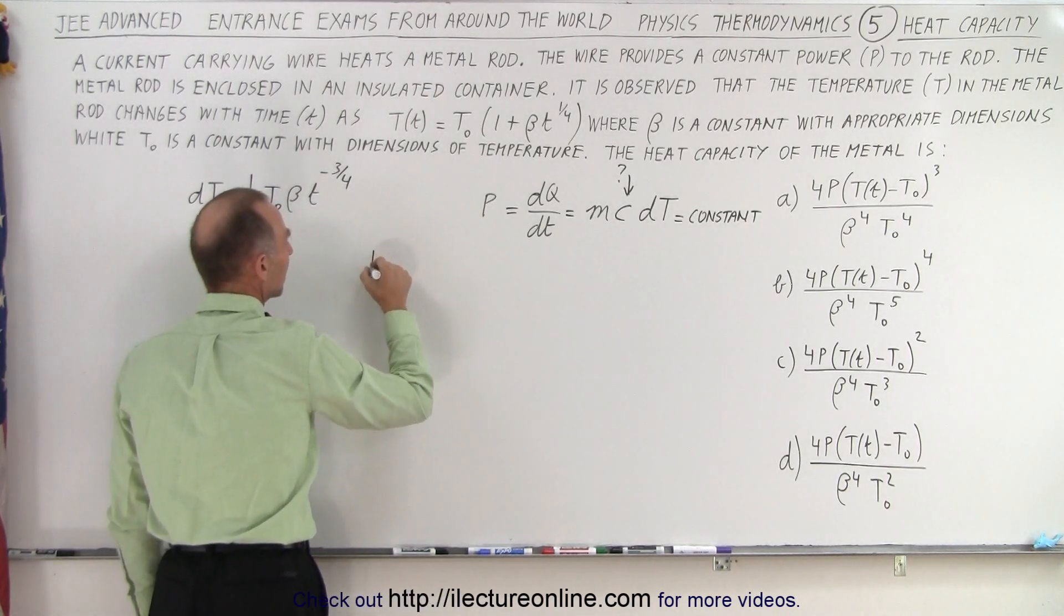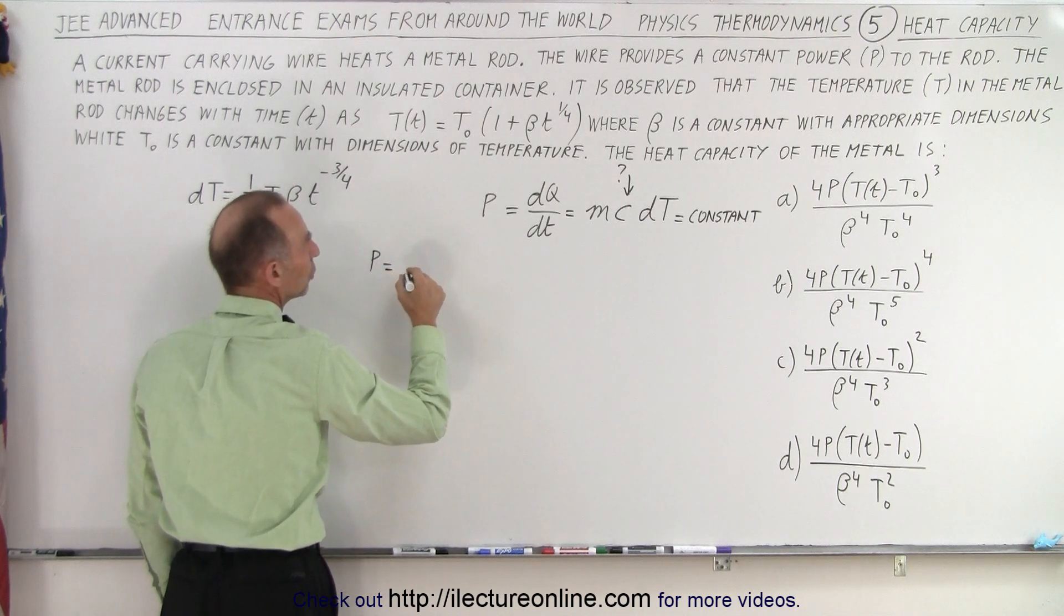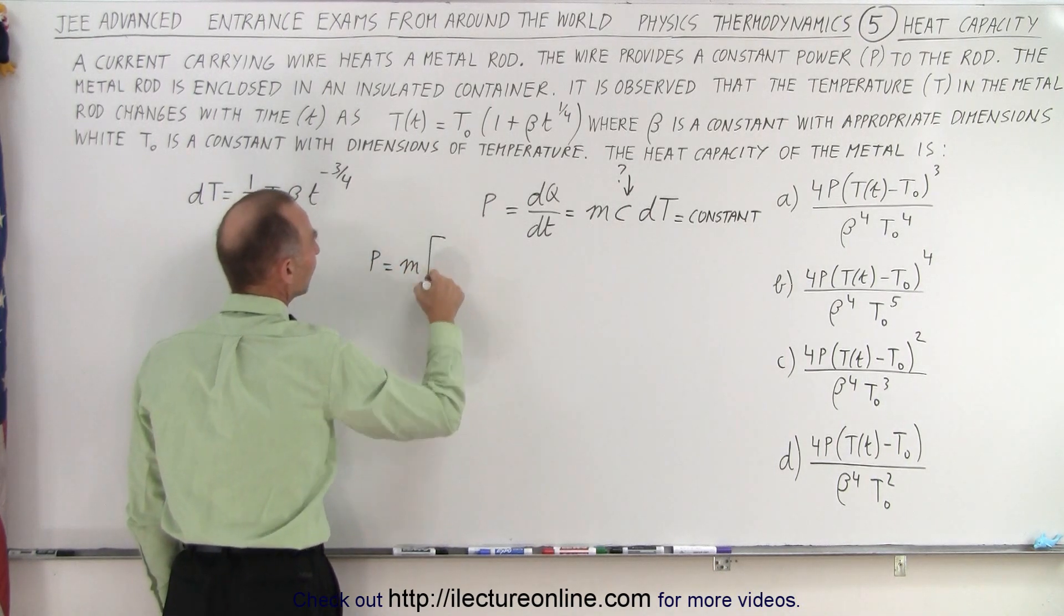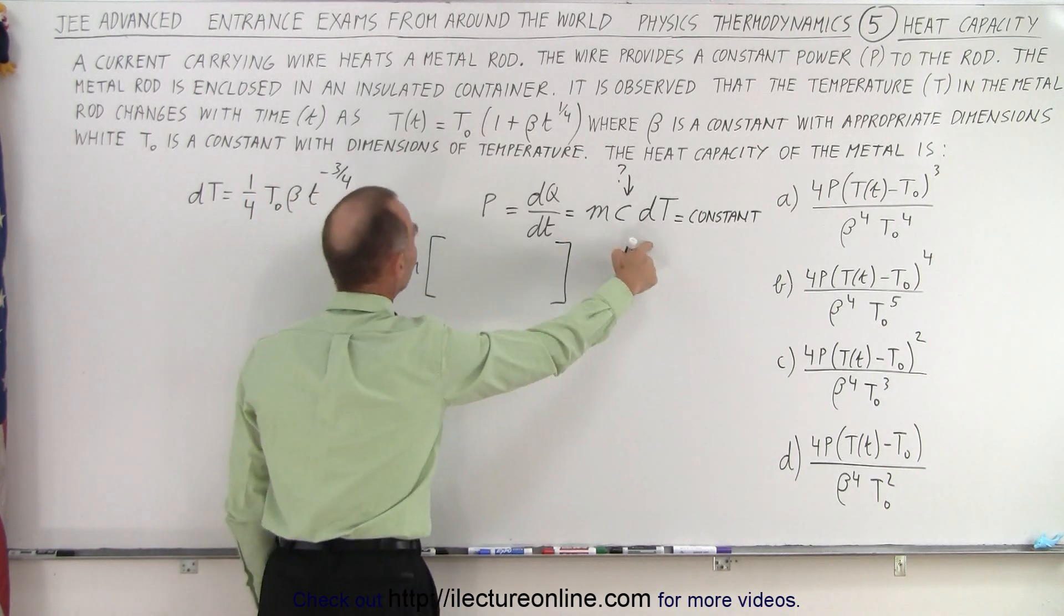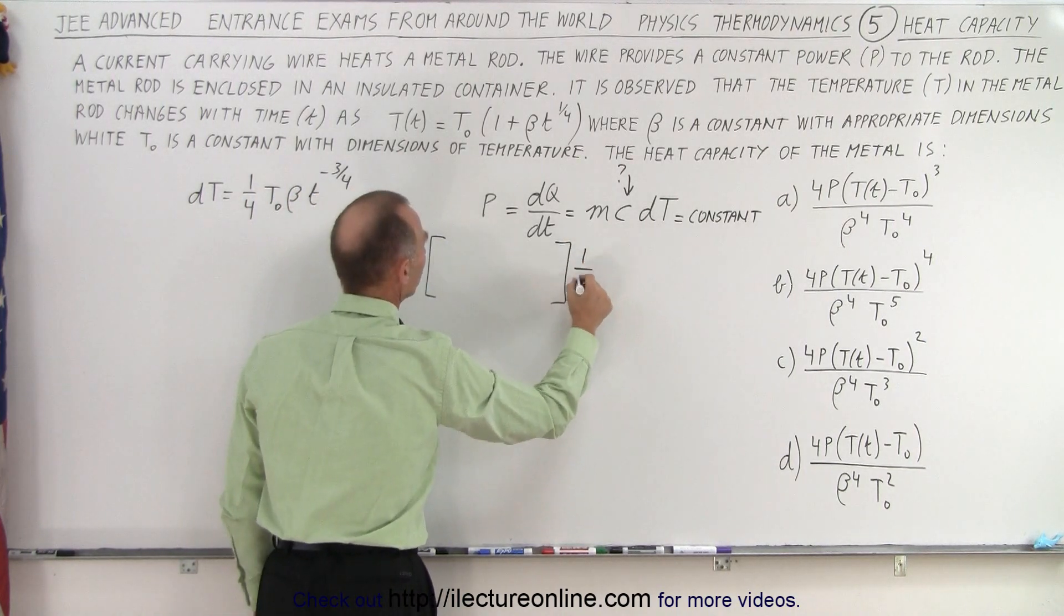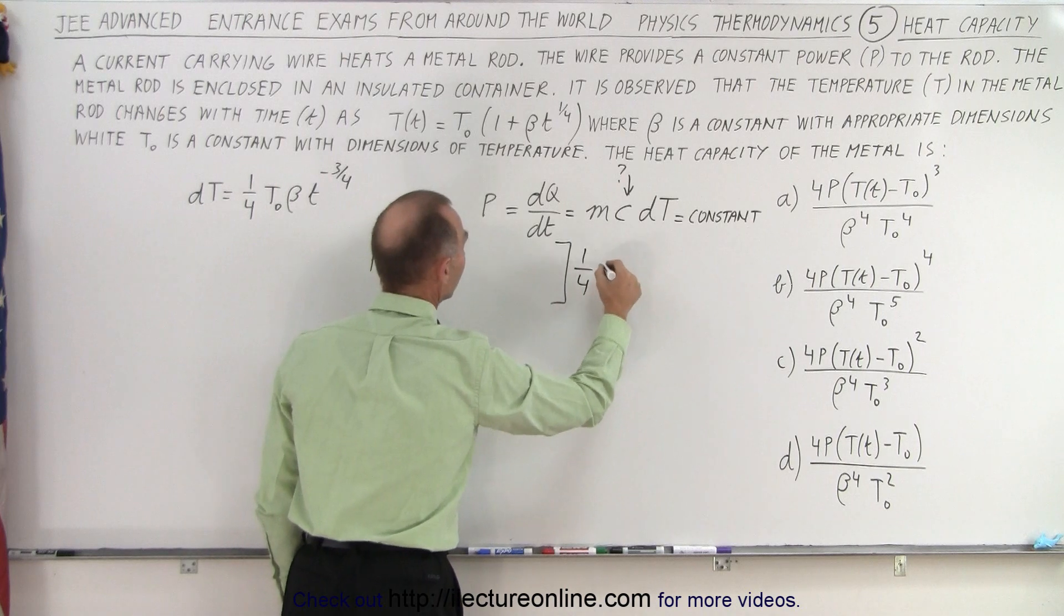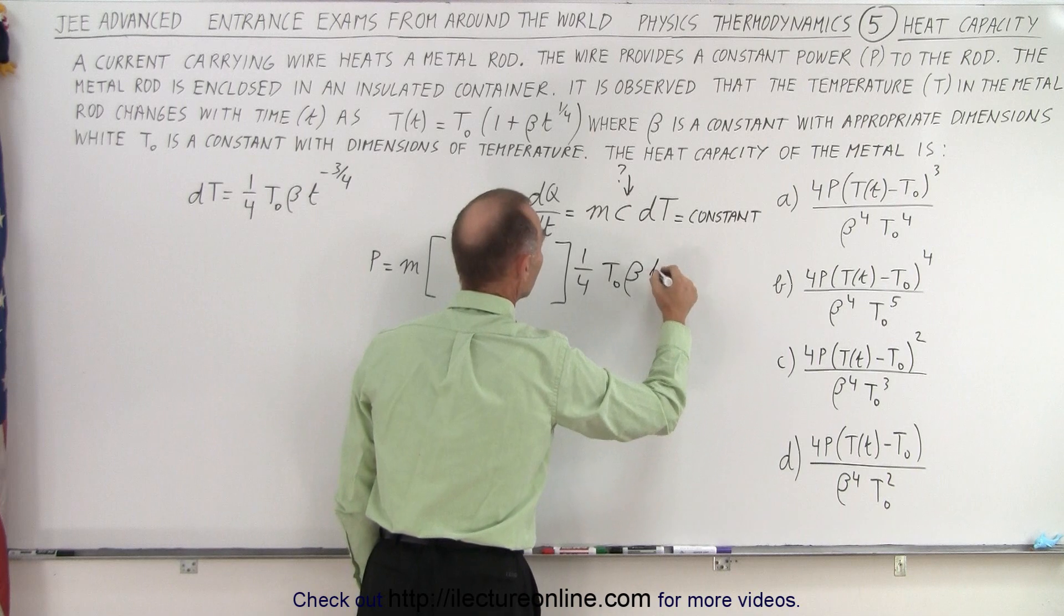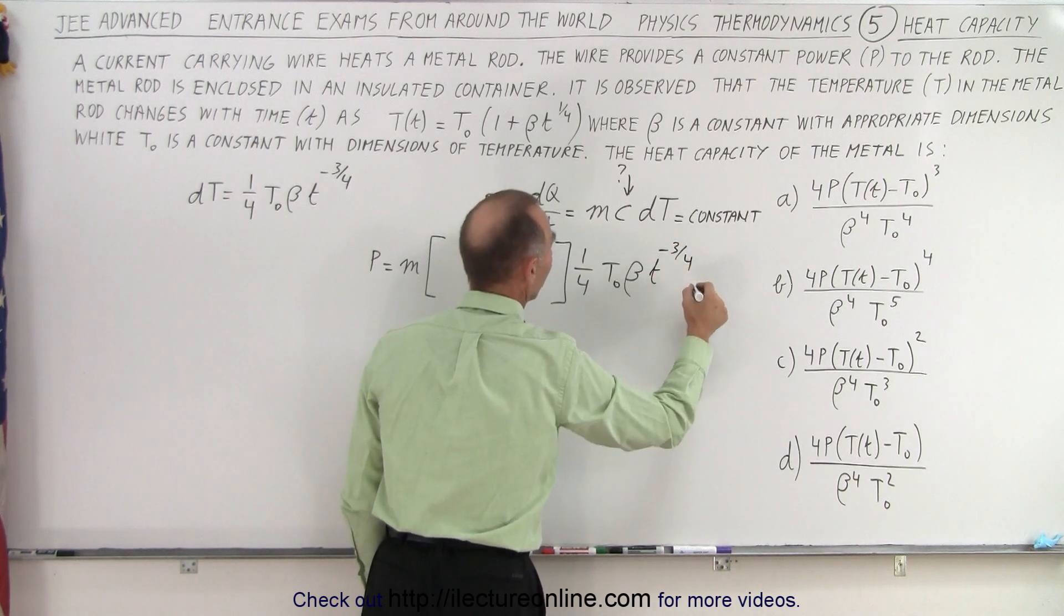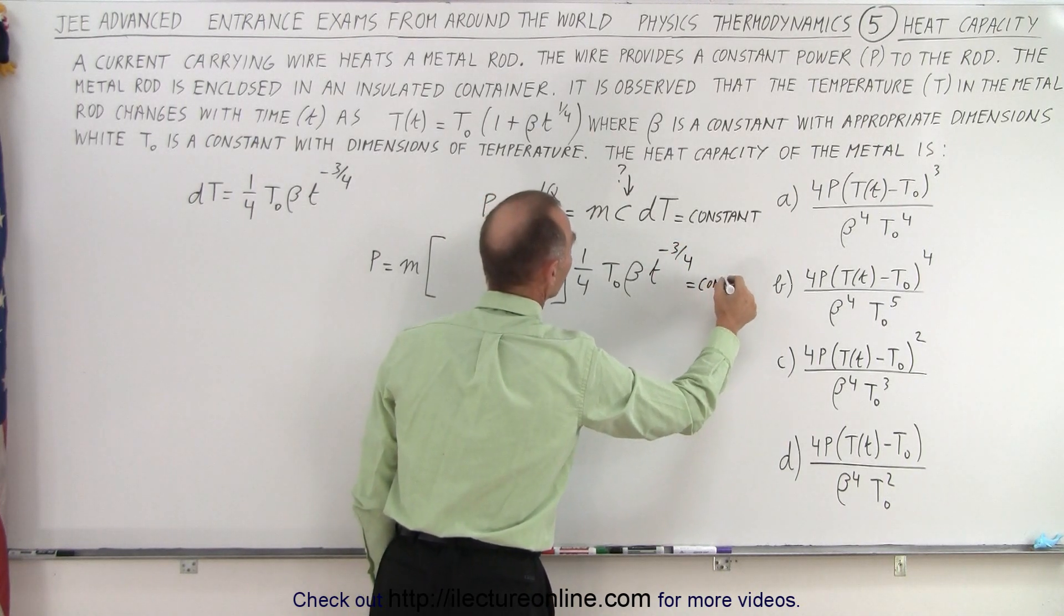And that can then be substituted in here. So what we can now say is that P is equal to m times c, whatever c is, times dT which is equal to one quarter times T initial times beta times t to the minus three fourths. And we know that that must be a constant.